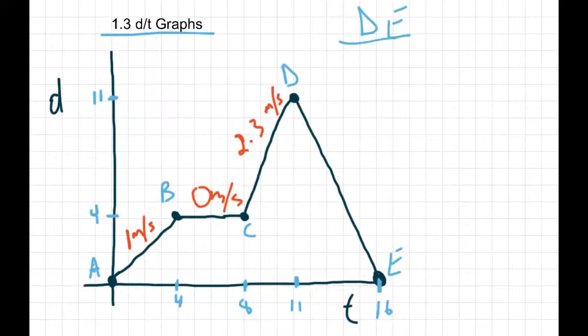And our distance, we're going from 11 down to 0. So if we do change in distance, remember you've got to go from final minus initial, so our velocity in this case would be 0 minus 11 meters. And our time would be 16 minus 11. So we end up getting negative 11 over 5, which will work out to negative 2.2.